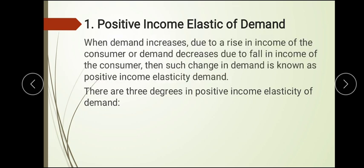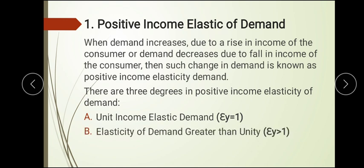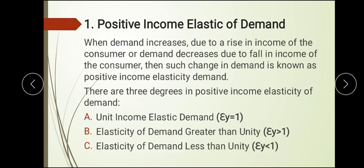Positive income elasticity of demand occurs when demand increases due to a rise in income, or decreases due to a fall in income — meaning it is directly proportionate. This is called positive income elasticity of demand. It has three sub-types: unit income elasticity (equal to one), elasticity greater than unity (more than one), and elasticity less than unity.